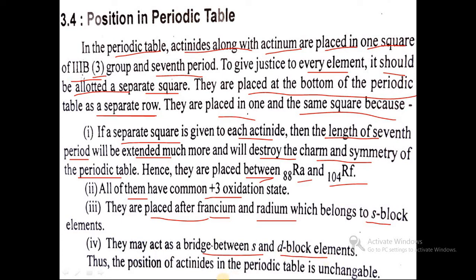Thus, the position of actinides in the periodic table is unchangeable. This is the fixed position. For simplicity purposes, they are placed at the bottom of the periodic table. So this is about the position of actinides in the periodic table.